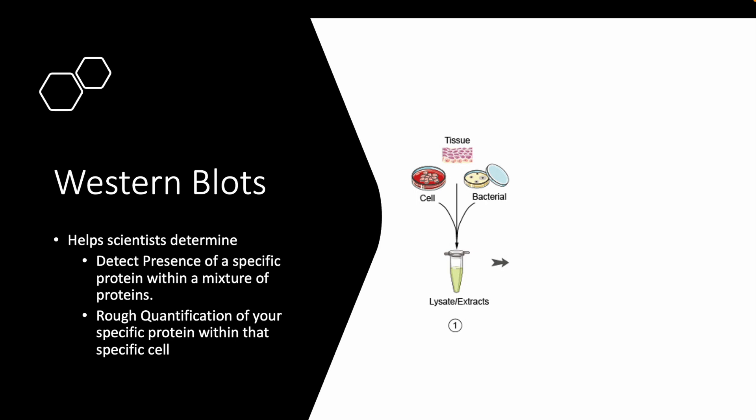What problem do western blots solve for scientists? Well, if you're working with an organism, it's going to have a complex array of proteins and a western blot will give you information about whether the protein is present and in what amount. It's a great way of separating out your protein of interest from all of the proteins within the cell system.